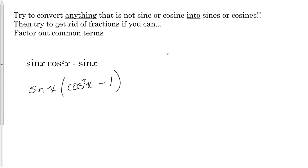Nothing ever disappears — when we factored out the sine it didn't go away, sine divided by sine is one, so we have to have a placeholder. Easy way to check: multiply back through. Sine times cosine squared gives sine x cosine squared x, and sine times negative one gives negative sine, so we know we factored it out correctly.